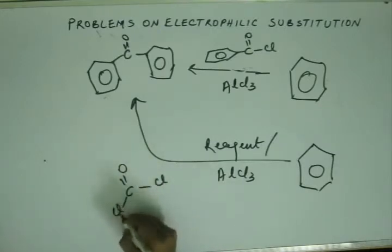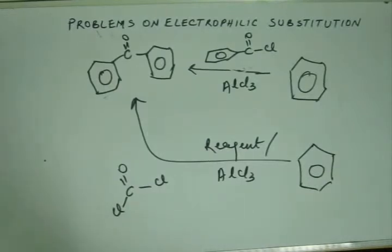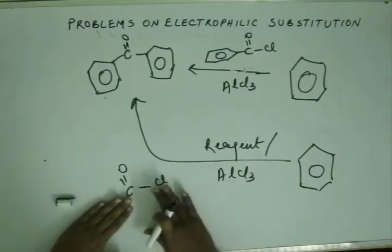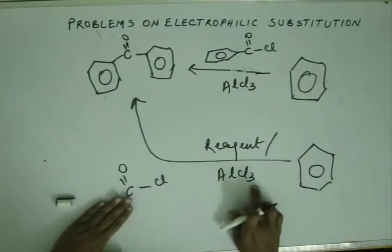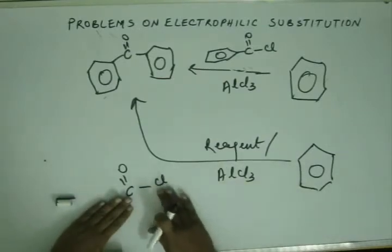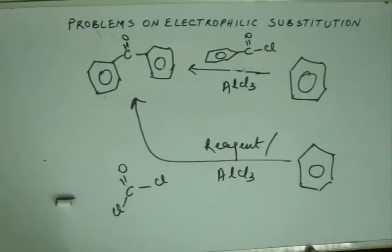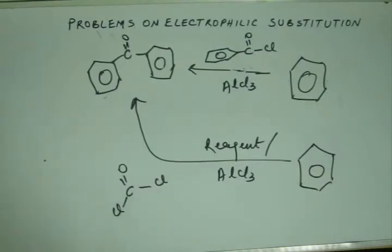Phosgene is a poisonous gas. Phosgene is COCl2 — you have Chlorine on both sides of C=O. Think of it as having one Chlorine as in an acyl group. AlCl3 snatches out one Chlorine, one Benzene ring gets attached. Then AlCl3 snatches out the other Chlorine, and another Benzene ring gets attached to the other side of the Phosgene. Because Phosgene has two Chlorines, both can be removed one by one, and two Benzene rings can be added, giving Benzophenone.